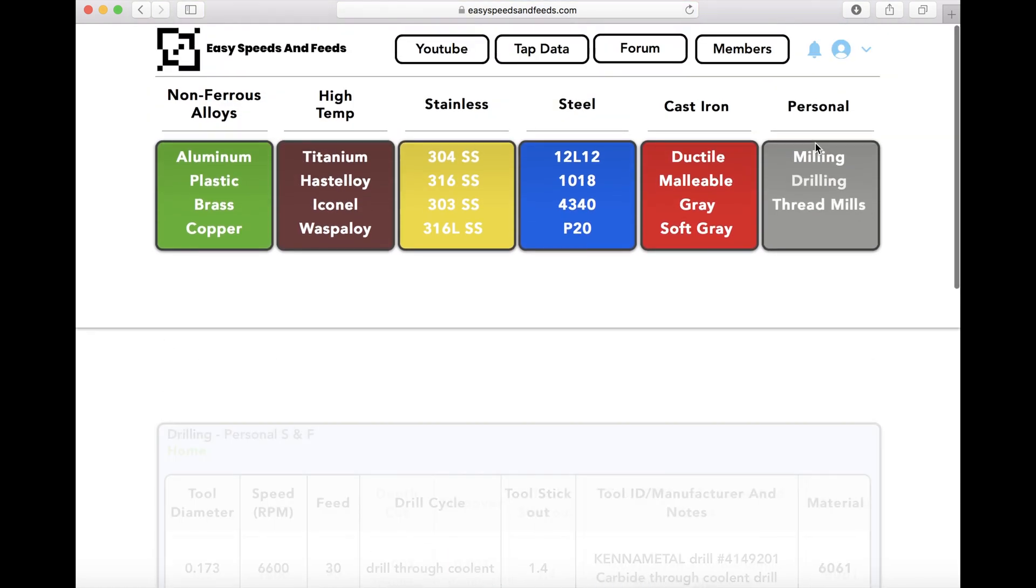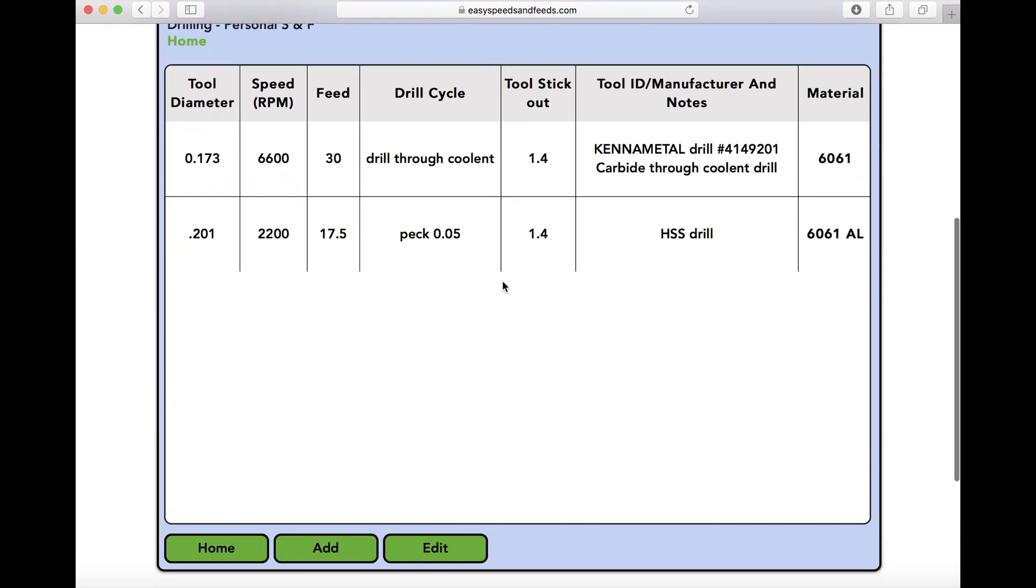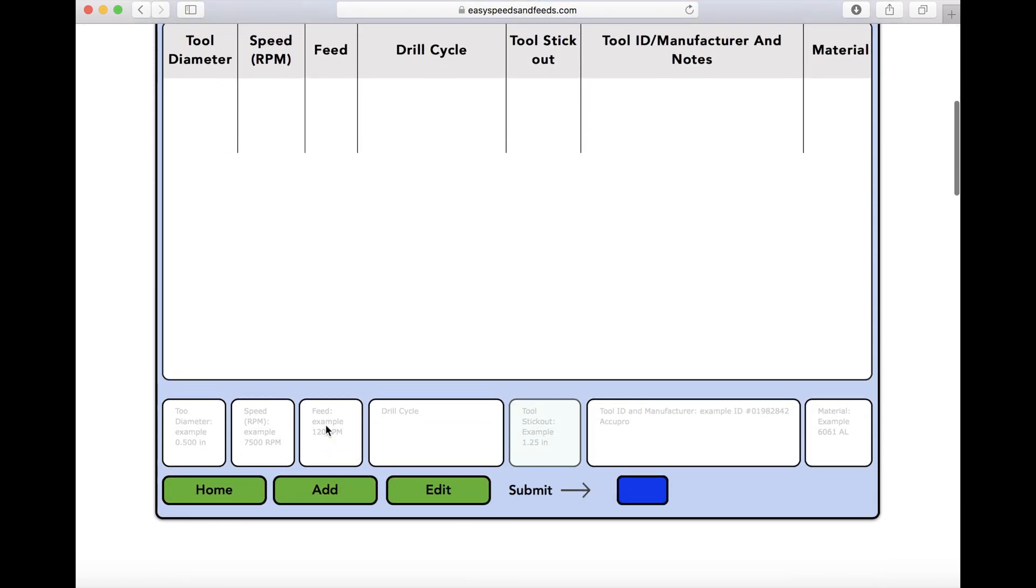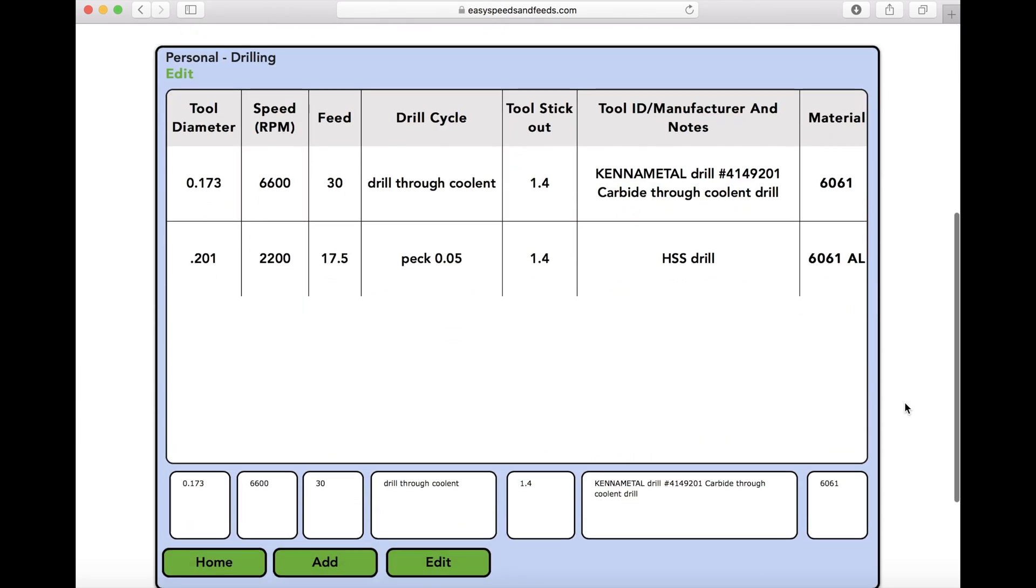We can go over to drilling. As you can see I have a couple drills in here - a through coolant drill and a normal drill. Most people don't always run through coolant drills, so it's nice to have your speeds and feeds, your drill cycle, the tool number, and basically how you use the tool. You can go back when you have to put holes in really fast, look how you did it, and skip the experimentation. You already know how you did it. I can go to edit just like milling and change things. I'm not going to change anything here because I like these speeds and feeds.